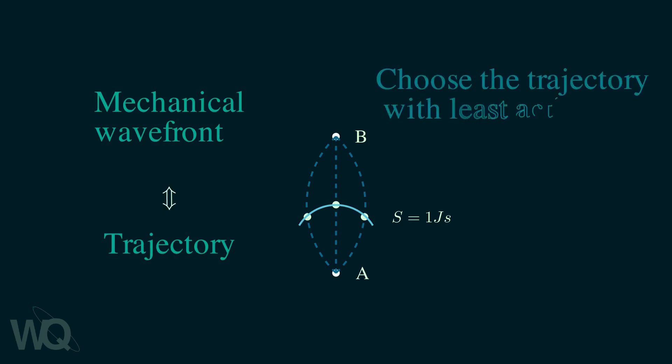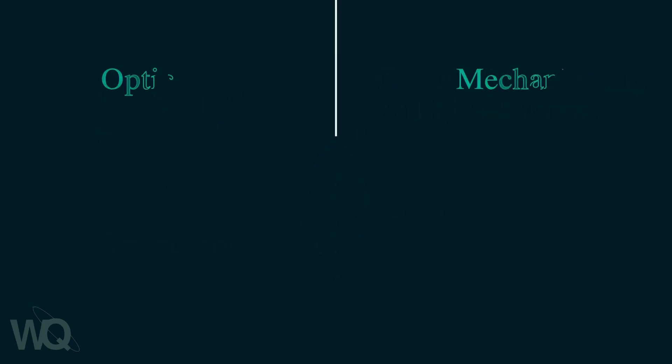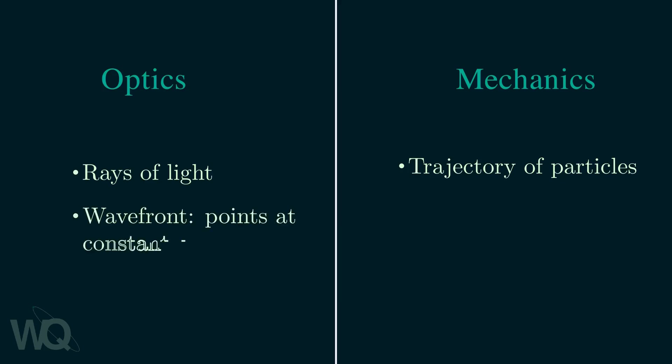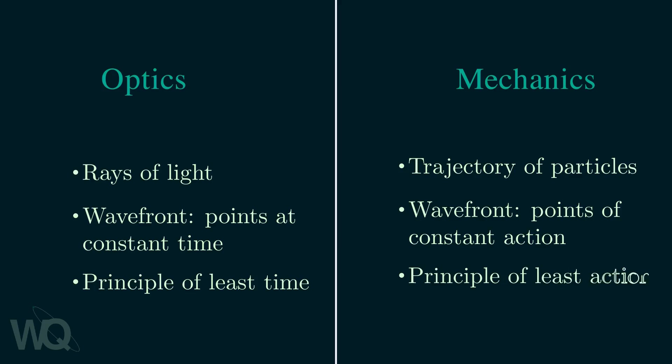Also in this case there are multiple trajectories that are perpendicular to the mechanical wave front. And here we choose the trajectory that has the least action. To summarize, in optics you have rays while in mechanics you have trajectories. In optics the wave front is the collection of points at constant time while in mechanics the wave front is points with constant action. In optics you have the principle of least time while in mechanics you have the principle of least action.